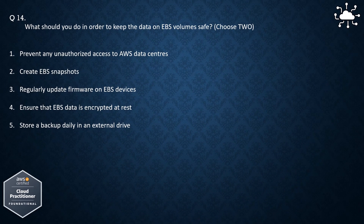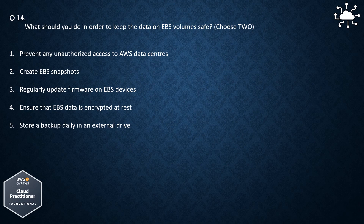Question 14. What should you do in order to keep the data on EBS volumes safe? Choose 2. 1. Prevent any unauthorized access to AWS data centers, 2. Create EBS snapshots, 3. Regularly update firmware on EBS devices, 4. Ensure that EBS data is encrypted at rest, 5. Store a backup daily in an external drive. The correct answers are: Create EBS snapshots and ensure that EBS data is encrypted at rest.